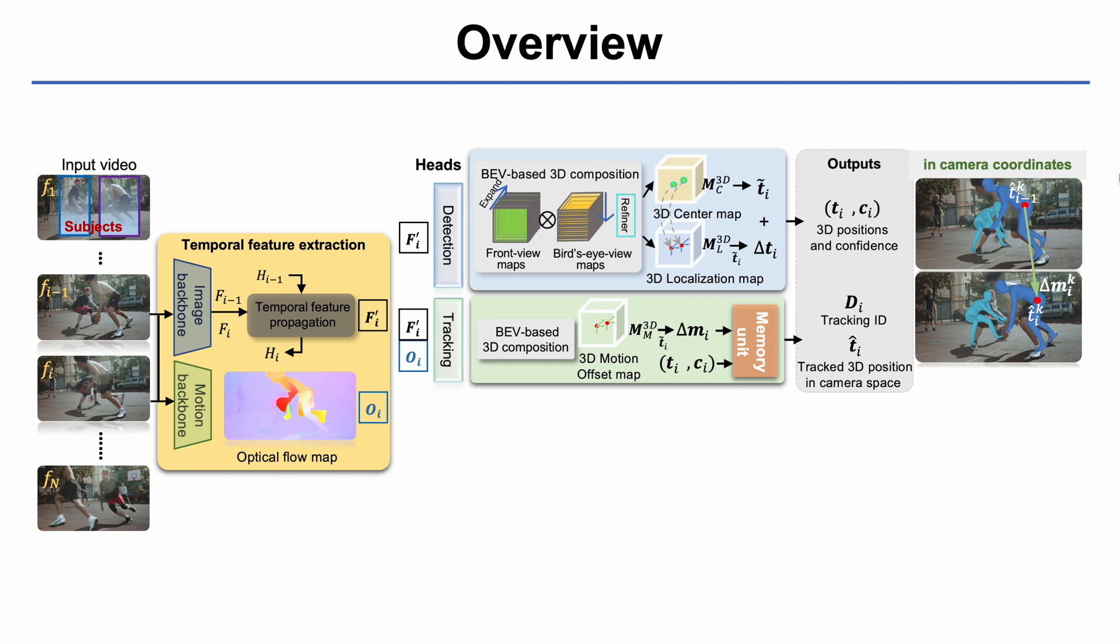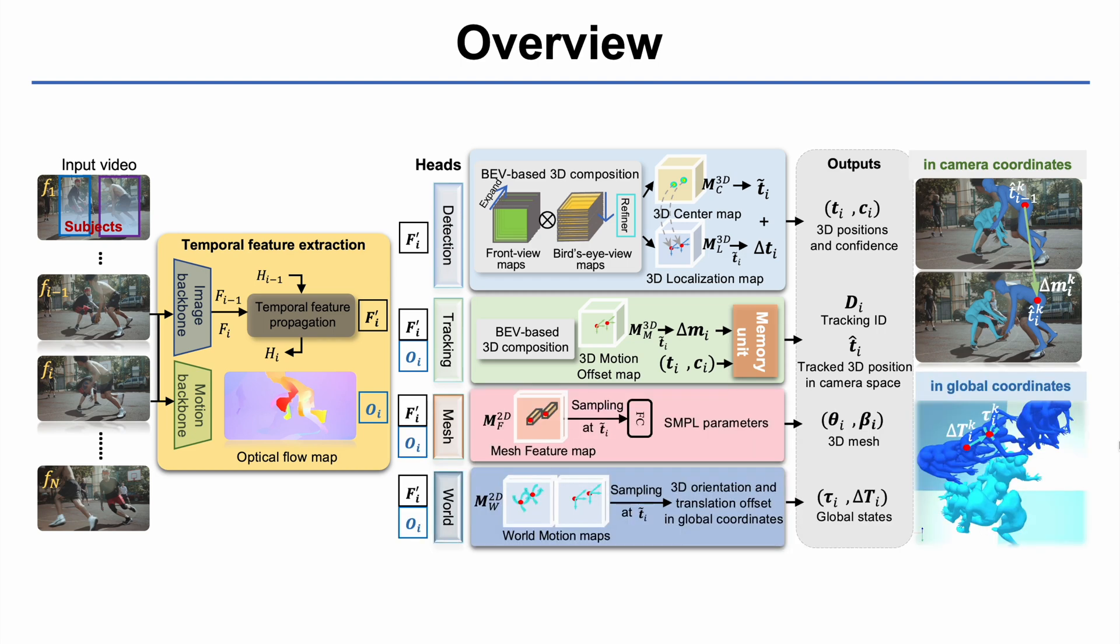The mesh branch regresses all the human mesh parameters in SMPL format from the temporal feature maps. Finally, to estimate subject trajectories in global coordinates, the world branch estimates a world motion map representing the 3D orientation and 3D translation offset of the subjects in global coordinates.